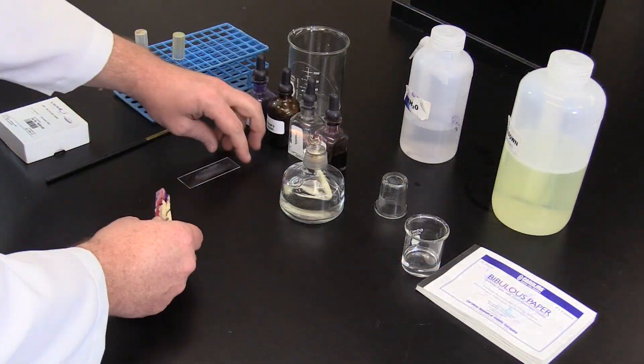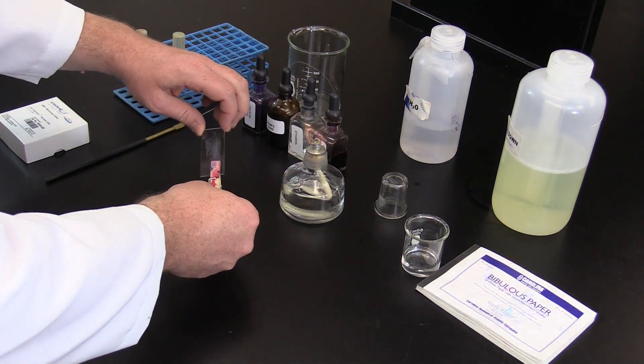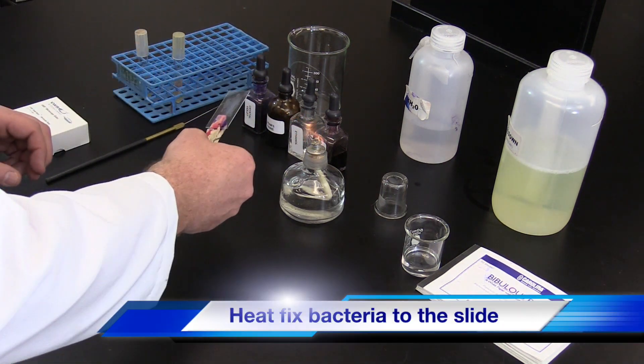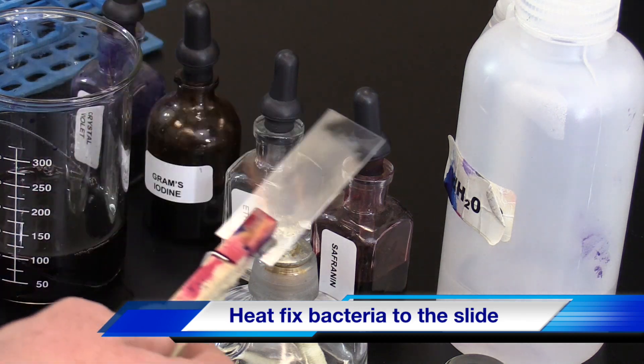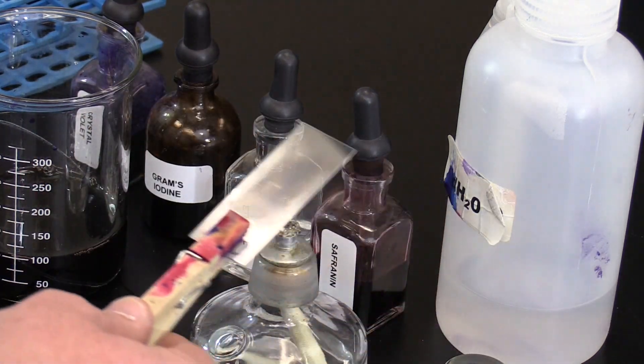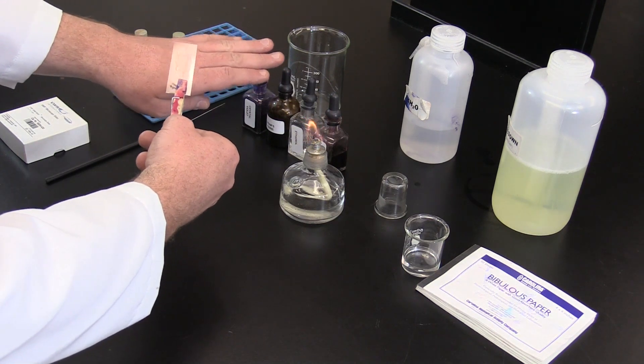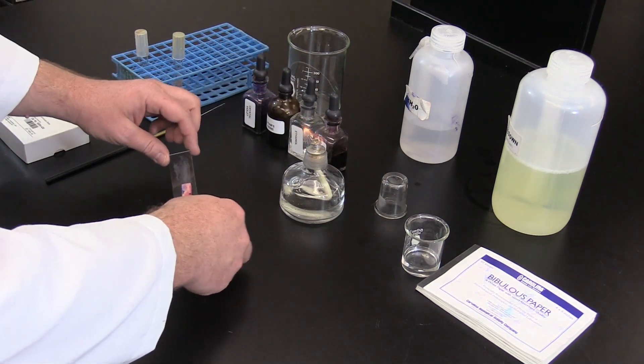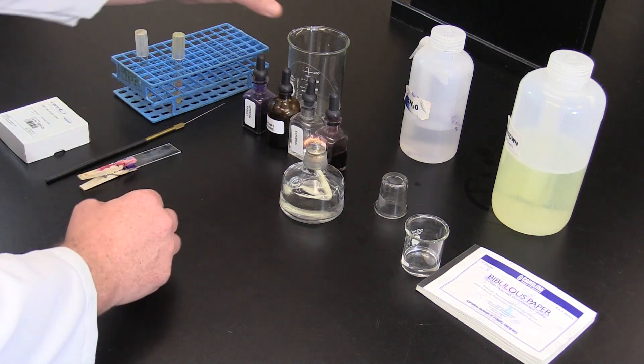Next, the sample needs to be heat fixed. This is done by passing the slide through the flame two or three times. In this way, it allows the bacteria to stick to the slide. However, if the slide becomes too hot to the touch, you'll need to restart as the bacteria have been cooked.